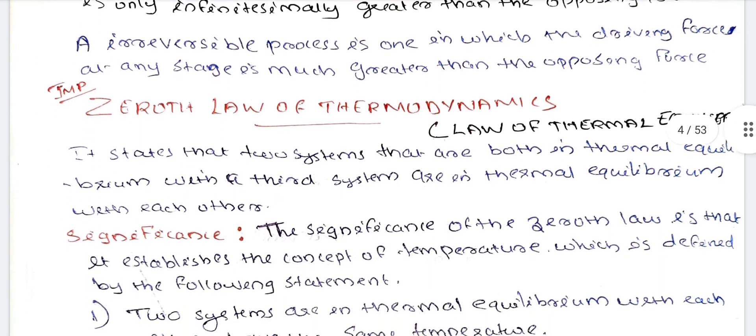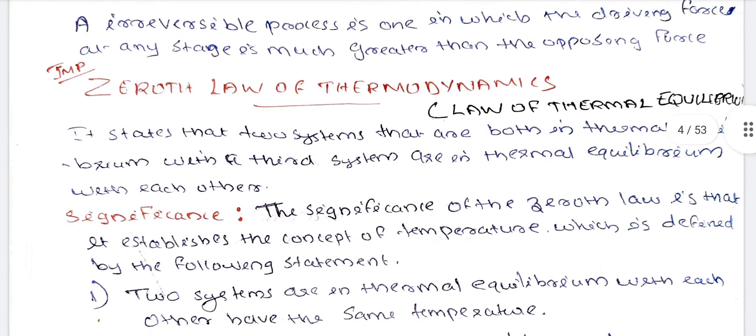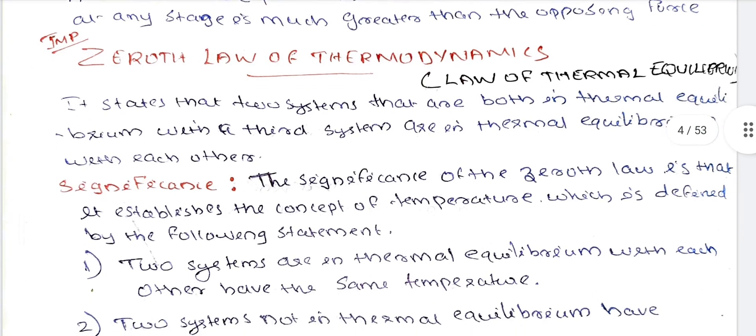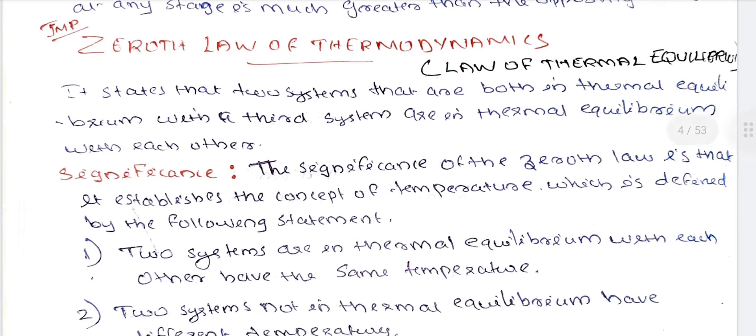The next topic is the Zeroth Law of Thermodynamics, also known as the law of Thermal Equilibrium. It states that two systems that are both in Thermal Equilibrium with a third system are in Thermal Equilibrium with each other.